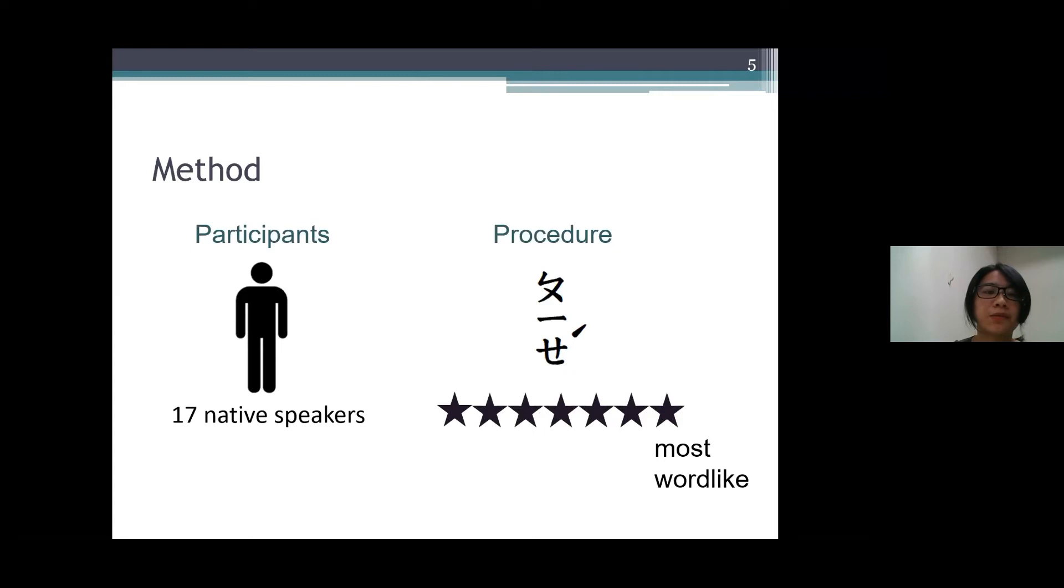So to answer our questions, we conducted a word-likeness judgment experiment. 17 native speakers of Taiwanese Mandarin participated in our experiment. They were prompted with visual stimuli written in Mandarin phonetic symbols, which is a transliteration system commonly used in Taiwan. And the participants were asked to try to produce the visual stimuli they saw, and they had to evaluate the word-likeness of these sound combinations based on a 7-point scale, with 7 being the most word-like.